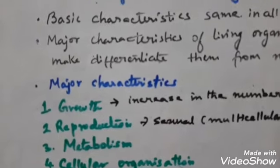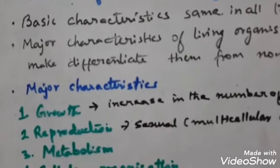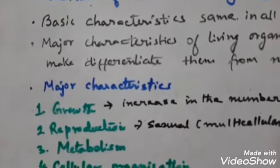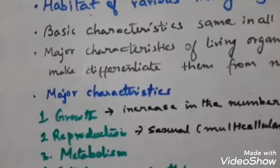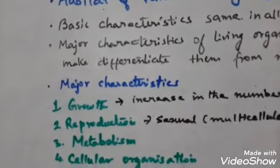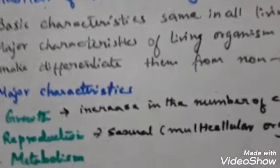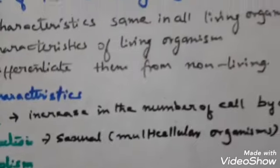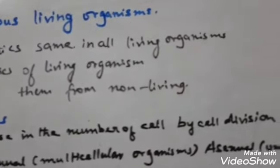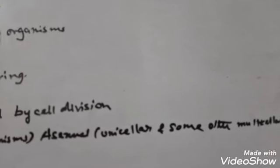The next topic is reproduction. Reproduction is the characteristic of a living organism by which offspring of its own kind are produced. In multicellular organisms, the mode of reproduction is generally sexual reproduction, but in most unicellular organisms and some multicellular organisms, asexual modes of reproduction are also seen.